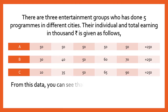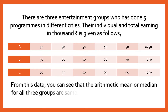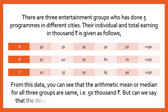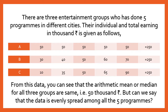From this data, you can clearly see that the arithmetic mean for all three groups is the same — 50,000 rupees — because the totals and number of programs are the same. But can we say the data is evenly spread among all five programs? Let's analyze them one by one to get a clear picture.